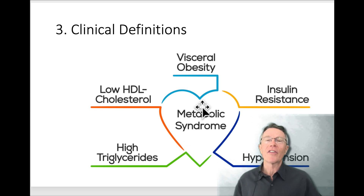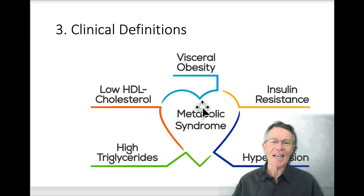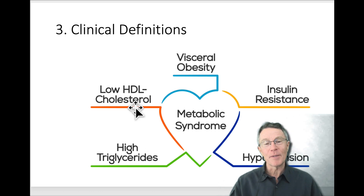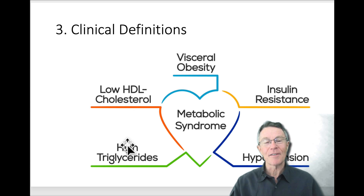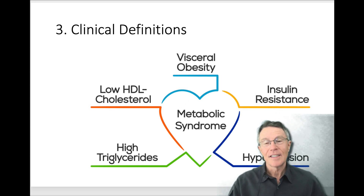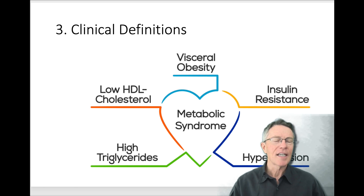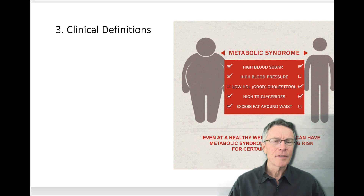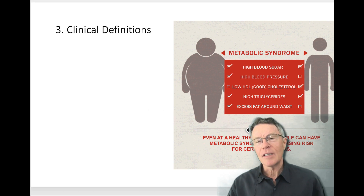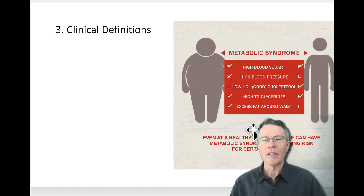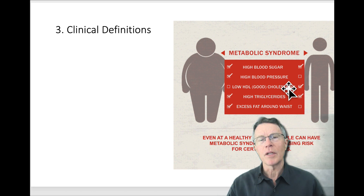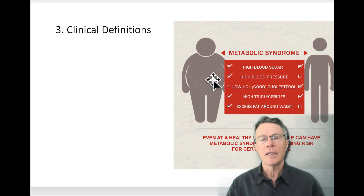Visceral obesity — fat around the inside of the abdomen. Low HDL cholesterol. High triglycerides — when I look at a cholesterol test, that's exactly what I look for: a high triglyceride-over-HDL ratio. Insulin resistance. And then high blood pressure. That's one of the more simple definitions. Doctors also noticed, when we were really talking a lot about metabolic syndrome 10 and 20 years ago, that it doesn't always have to have high blood pressure. And you don't have to always have a lot of excess fat around your belly — at least on the outside; you might be skinny and have it on the inside.